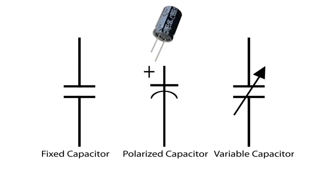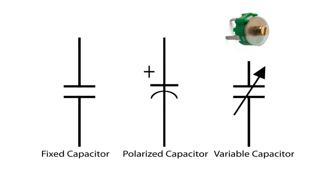A polarized capacitor is one that has specific positive and negative polarities. While using these capacitors in circuits, it should always be taken care that they are connected with the correct polarities. A variable capacitor is a capacitor whose capacitance may be intentionally and repeatedly changed mechanically or electronically.